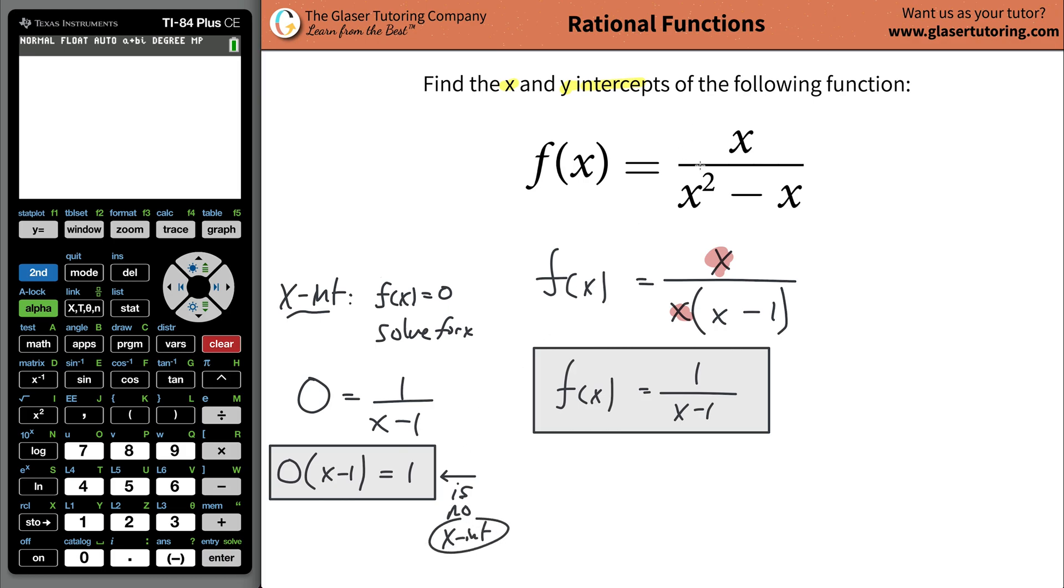In other words, if you ever have what's considered now a bottom heavy function, this is considered a bottom heavy function, where the power of x in the denominator is bigger than the power of x in the numerator, you have no x in the numerator. So therefore the x's power is technically 0, right? Anything to the 0 power is just 1. And in the denominator, it has a 1, it's to the first power. So the power of x in the denominator is bigger. Therefore, this is considered a bottom heavy function.